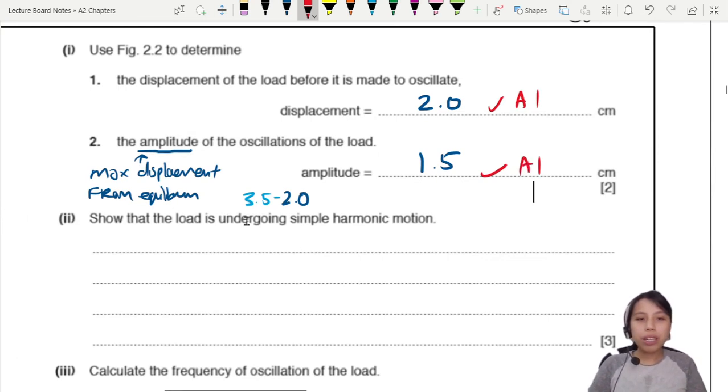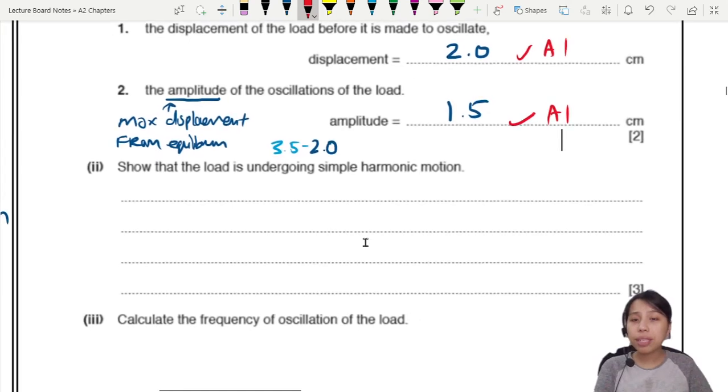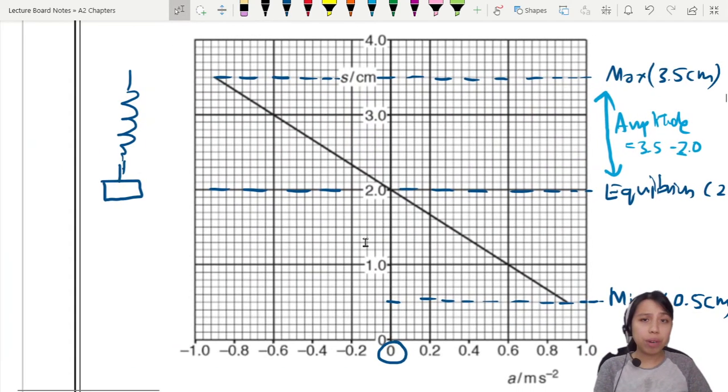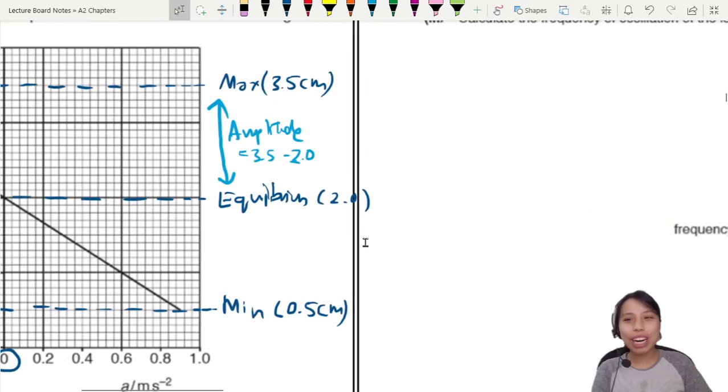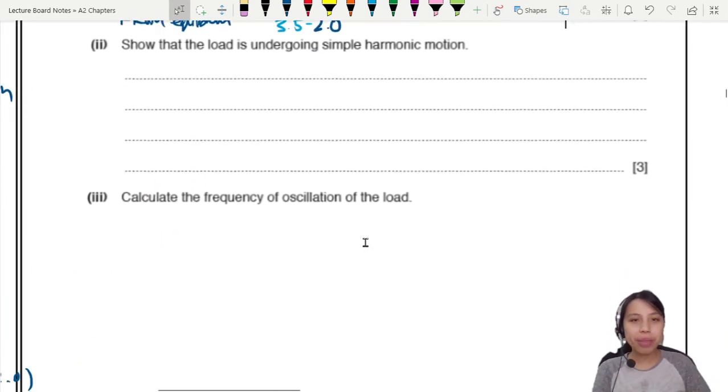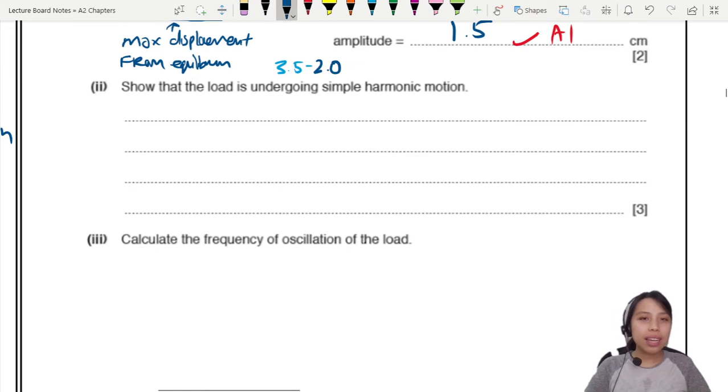Part 2. Show that the load is undergoing simple harmonic motion from the graph. The only clue we have here is our graph. But what is simple harmonic motion? You need to remember that we looked at in the previous theory video that there is one general pattern of simple harmonic motion.